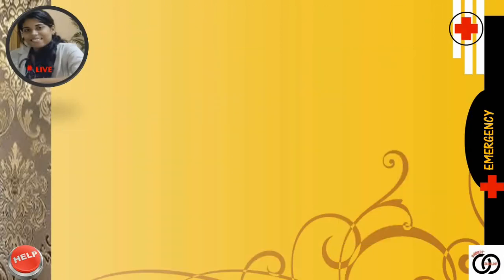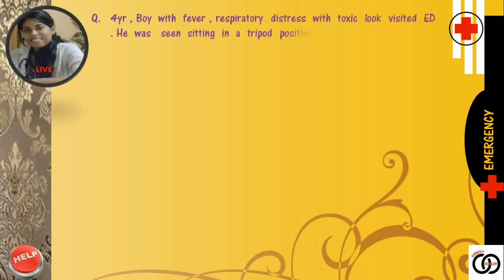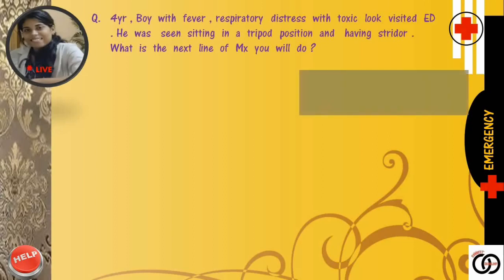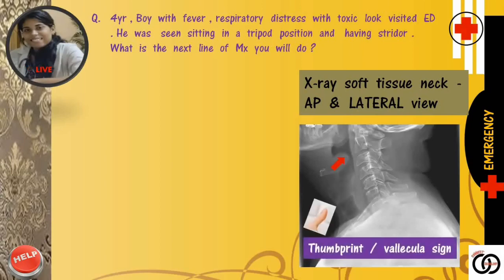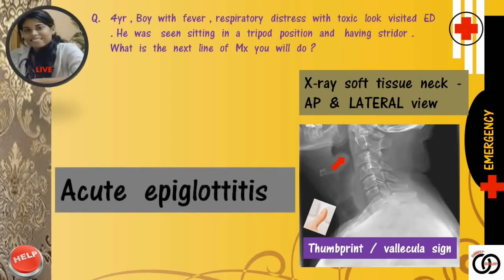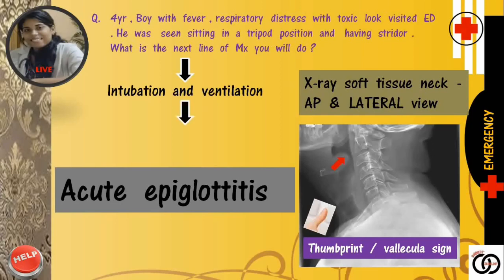Moving forward, the next question: A 4-year-old boy with high-grade fever and chills, respiratory distress, with toxic look visited the emergency department. He was seen sitting in a tripod position and having stridor. What's the next line of management? We did an urgent X-ray soft tissue neck, AP and lateral view, and we get this film. Follow the red arrow mark — appreciate the swollen epiglottis. It's the thumbprint sign or the follicular sign of acute epiglottitis. But acute epiglottitis is an emergency diagnosed on the basis of clinical features — we can't wait for this X-ray finding. Our next line of management should be immediately establishing the airway by intubation or tracheostomy. After establishing the airway, we can go for other treatments like fluids or IV antibiotics.